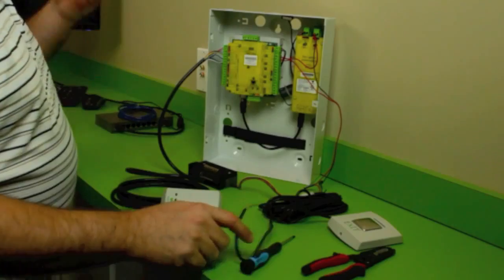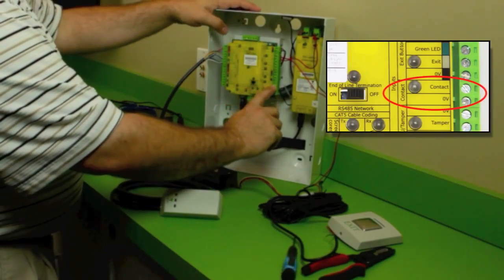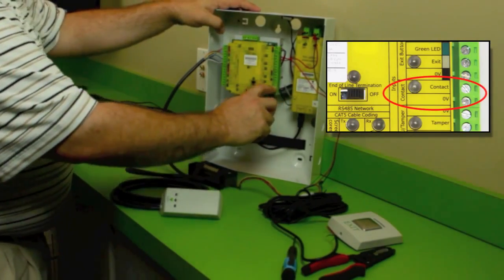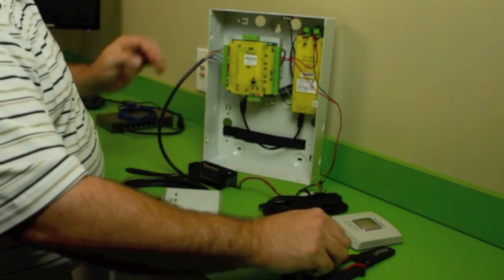If you had a door contact, you would also wire your door contact in right here. It's two wires, non-polarity sensitive. It's just going to tell you whether or not your door is open or closed.